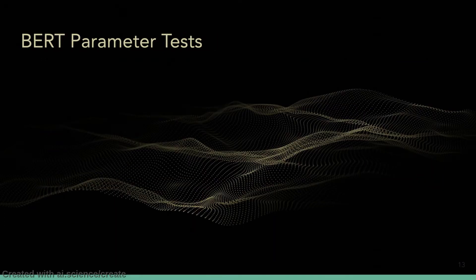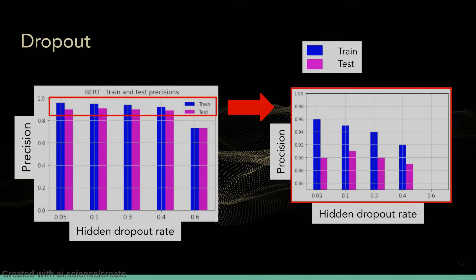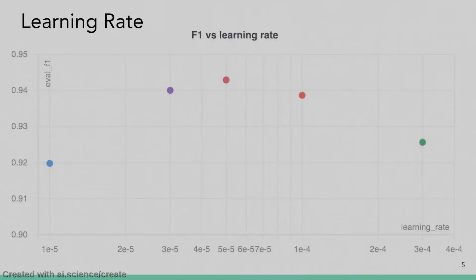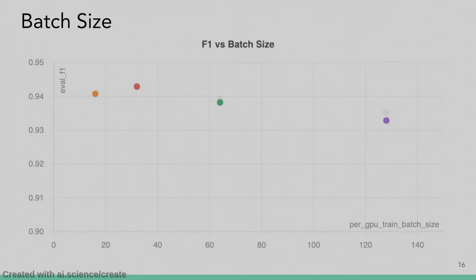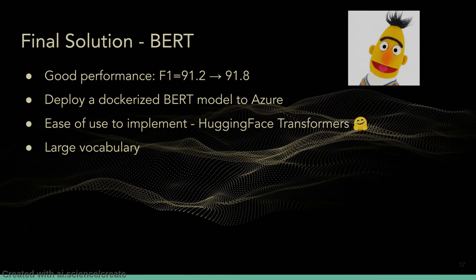At this point, we wanted to see if we could modify parameters to further increase our performance. The first parameter we looked at was dropout, which controls how many neurons are randomly turned off during training and can help make more robust models. The graphs show precision versus dropout rate, with the right graph being a zoom in of the top of the left graph. Any dropout rate from 0.05 to 0.3 will get roughly the same results, with 0.1 doing the best. We then optimized our learning rate and batch size to achieve our best BERT model, increasing our F1 score from 91.2 to 91.8.